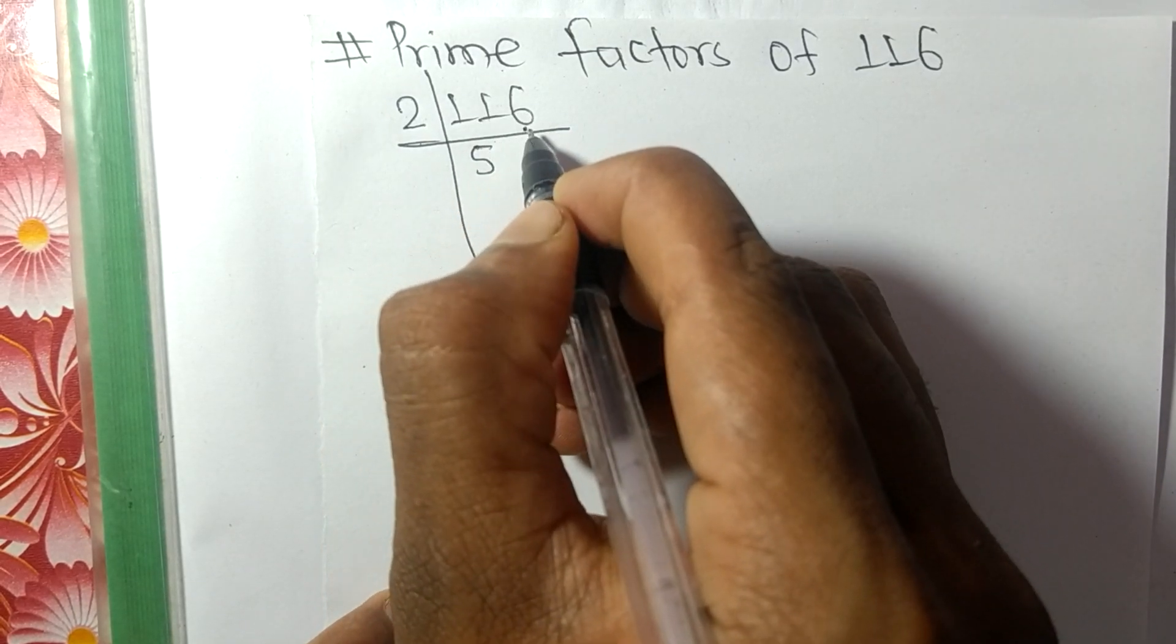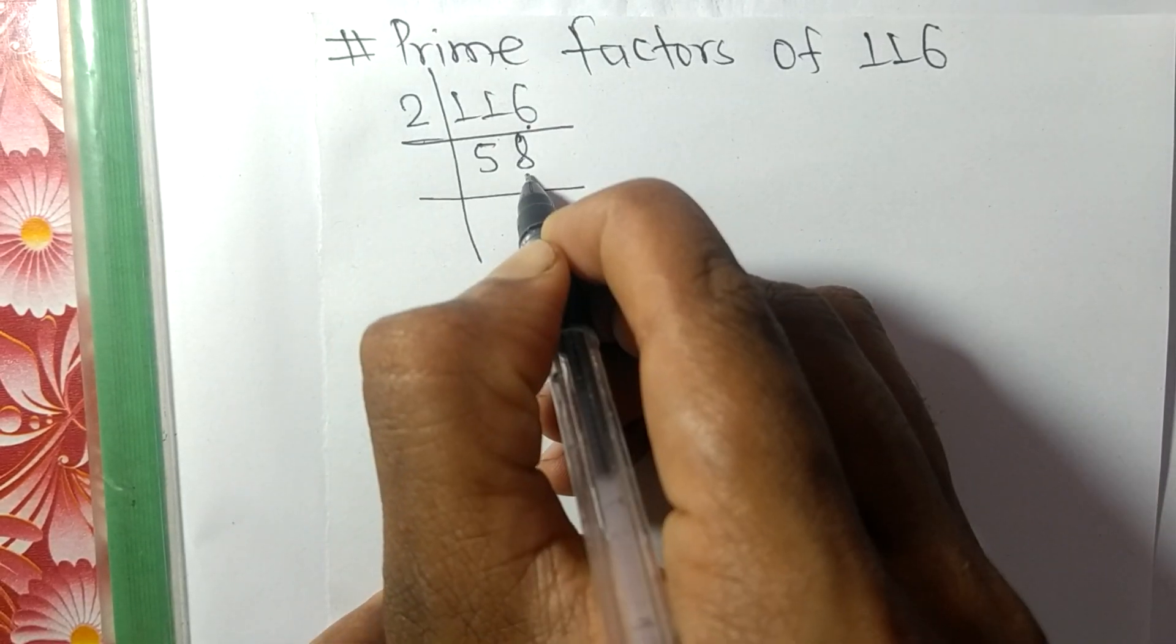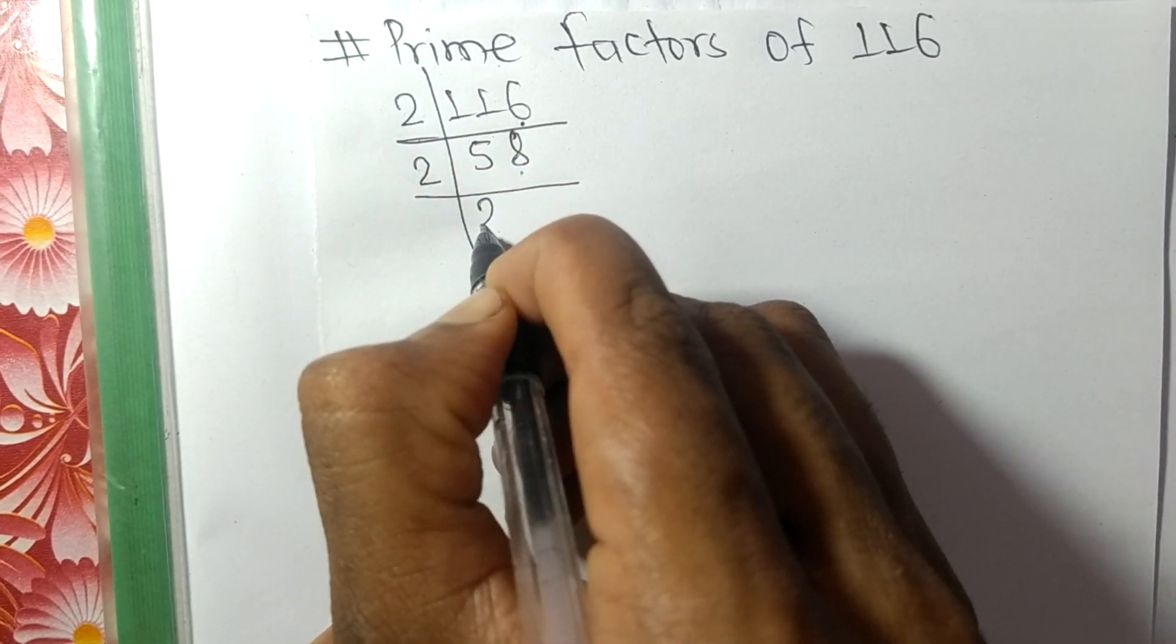16. 2 times 8 is 16. We get 58. Again, even number 8, so divisible by 2.